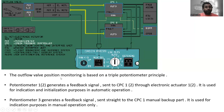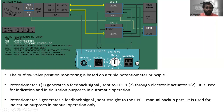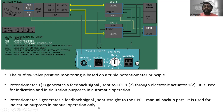Outflow valve position monitoring is based on the triple potentiometer principle — there are three potentiometers. Potentiometer one or two generates a feedback signal sent to CPC1 or CPC2 through electronic actuator one or two; it is used for indication and initialization purposes in automatic operation. Potentiometer three generates a feedback signal sent directly to the CPC1 manual backup part and is used for indication purposes in manual operation only.